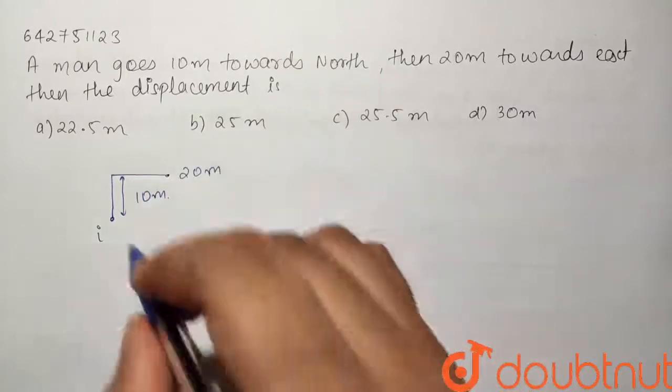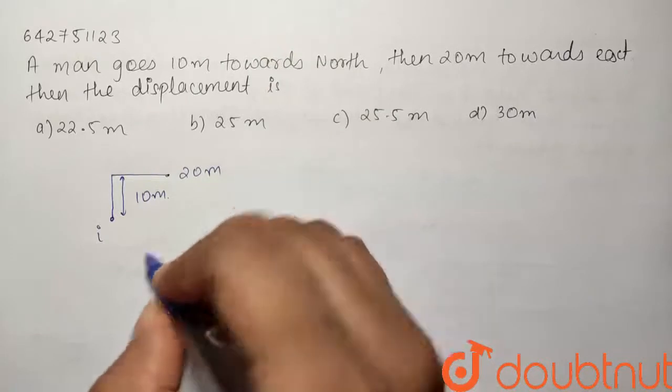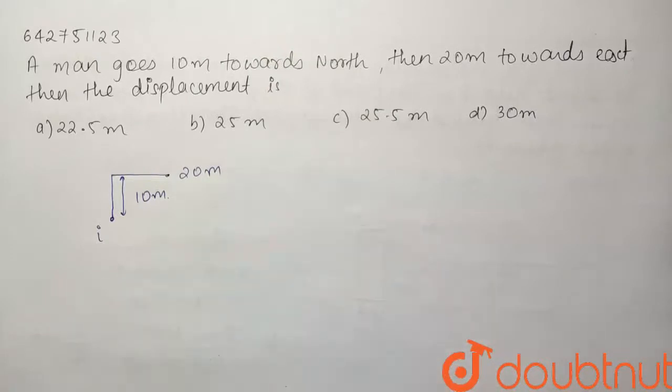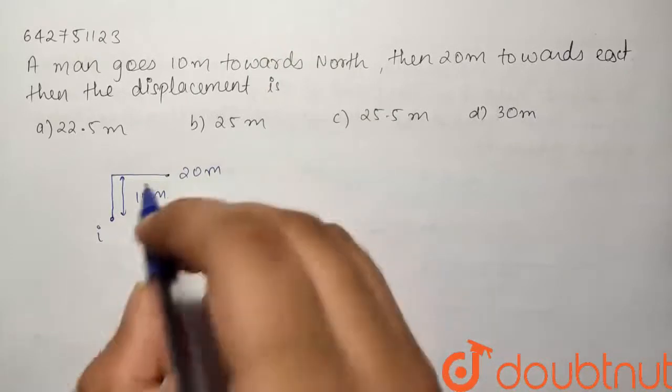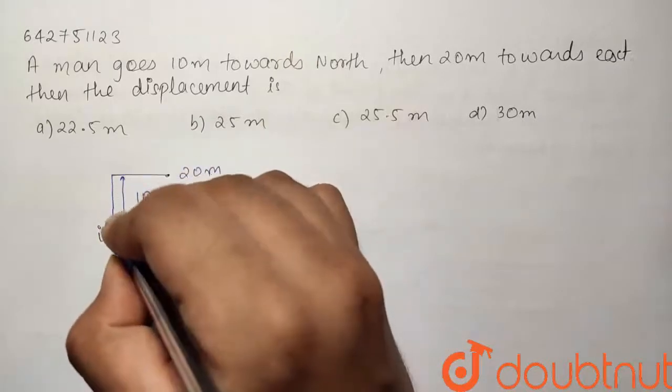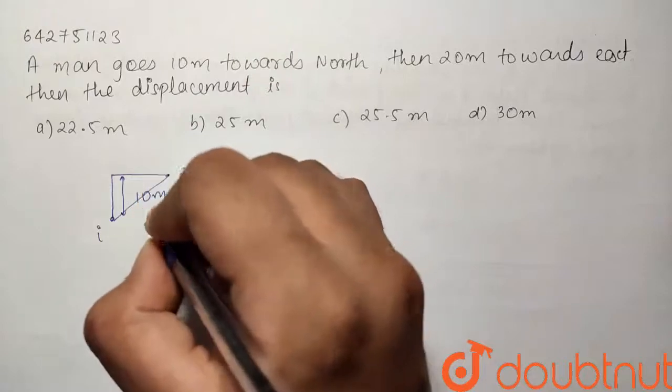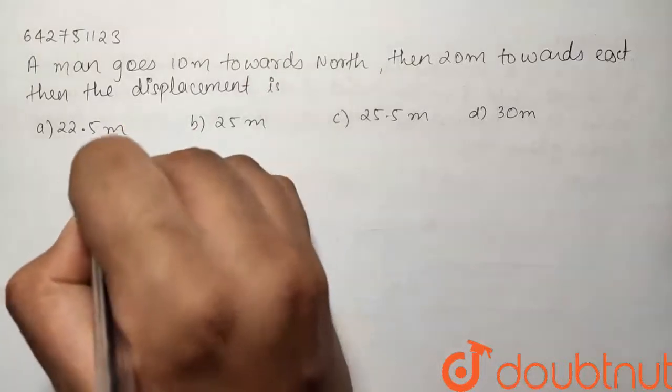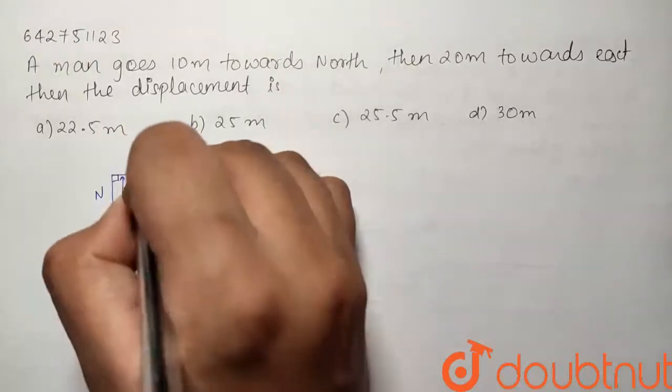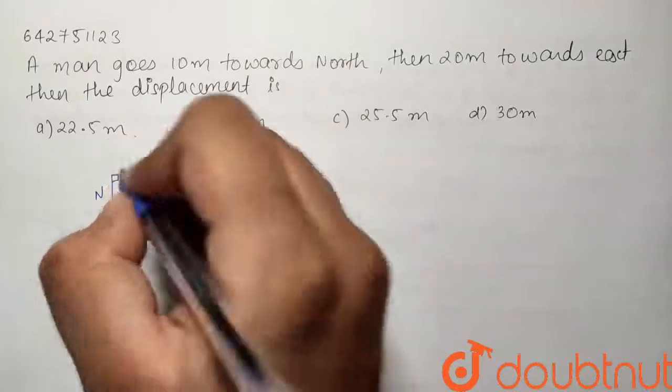Now we have to find out the displacement. We know that displacement is the minimum distance between the two points. So this will be the straight line joining these two points, and this will be the minimum distance. And if this is north and this is east, then this angle will be 90 degrees.